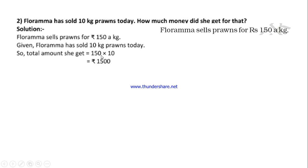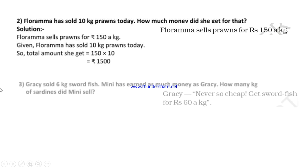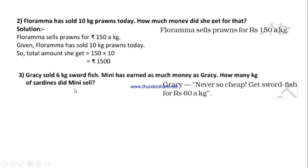We have taken out 2 zeros and we are writing those 2 zeros in the answer column as the last digits. So on the left-hand side we have 15, and on the right-hand side we have 1. 15 ones are 15. So the answer is 1500. The cost of 10 kg of prawns is Rs. 1500.